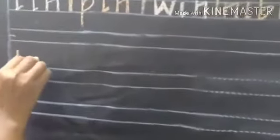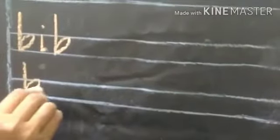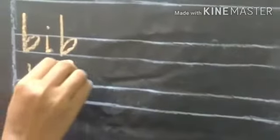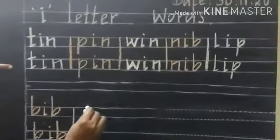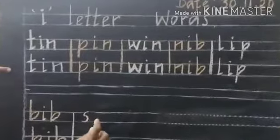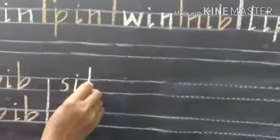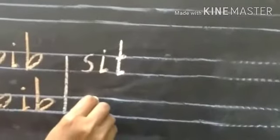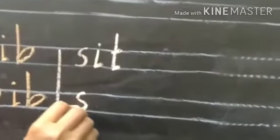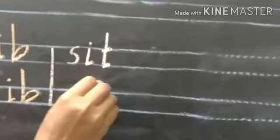Now we are going to write bib. B-I-B, bib. Write once again. B-I-B, bib. Next word is sit. S-I-T, sit. Write once again. S-I-T, sit.